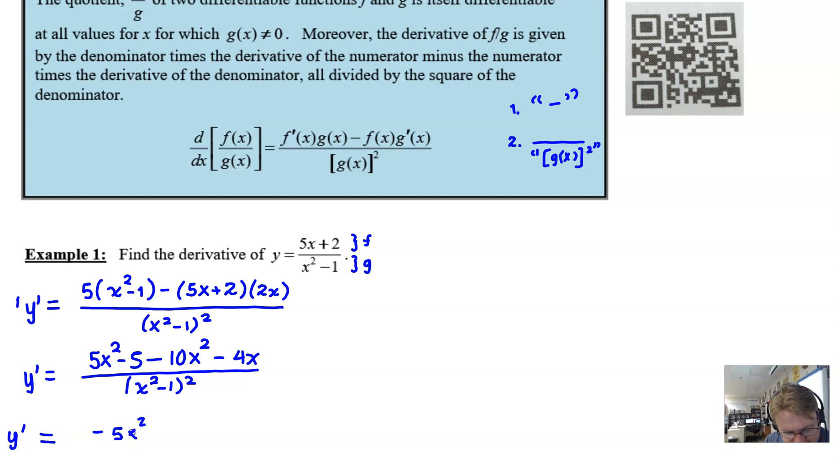5x squared minus 10x squared would be negative 5x squared. And then I have a minus minus 4x. And then I think I have a minus 5. And that's pretty much all that we can do with that numerator. The denominator, as I said, will stay just as he is. And that would be our result.